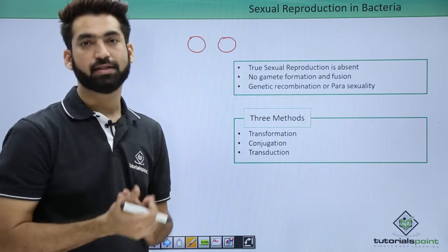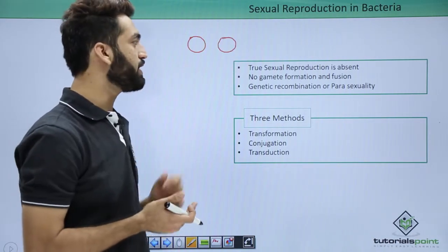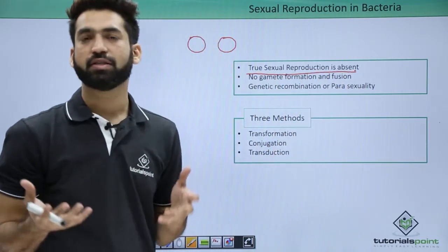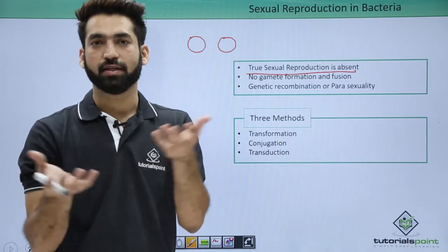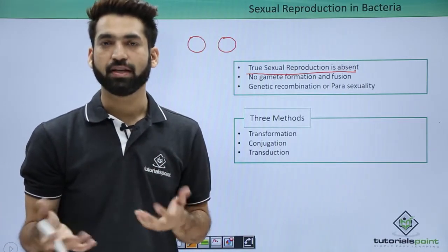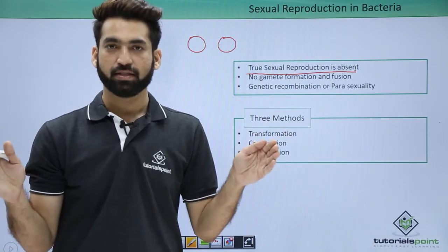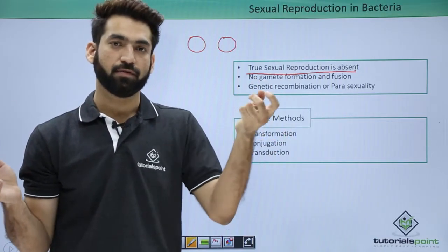True sexual reproduction is absent in bacteria. Sexual reproduction, as you must know in higher plants, human beings, or higher animals, involves two parents, and both of these parents will form gametes.